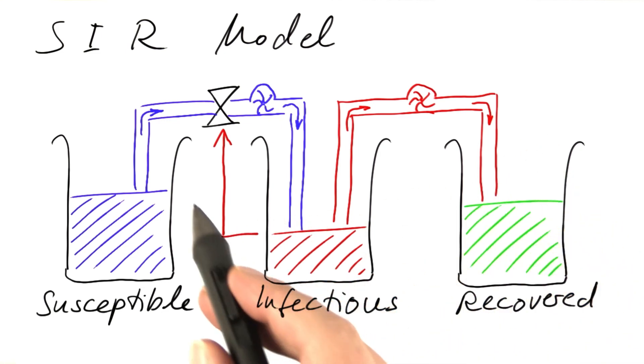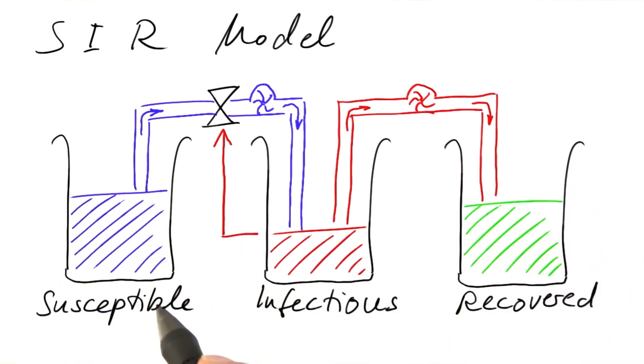We simply say that our population is made up of susceptible, infectious, and recovered persons, and we only look at the total number of these persons.